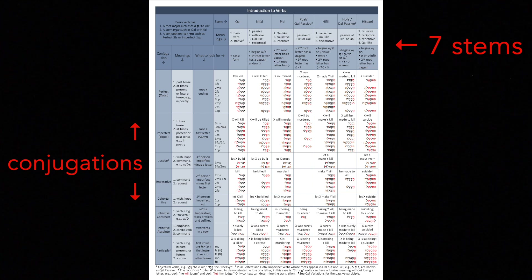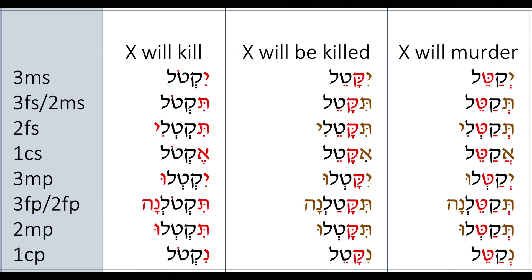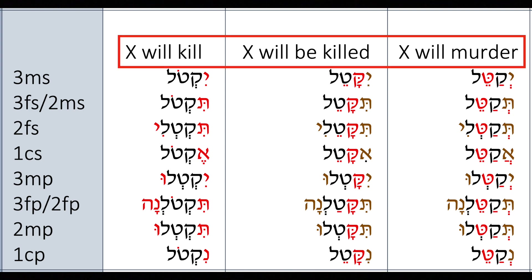So in one chart, you end up having every form for a strong root — a root that doesn't change too much. The example I gave, following the tradition, is katal, 'to kill.' Yeah, I know, it's a lot of killing.